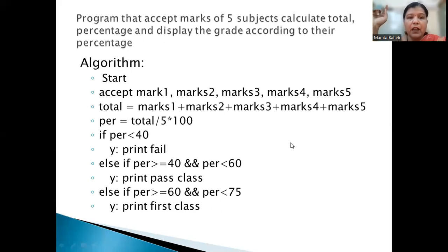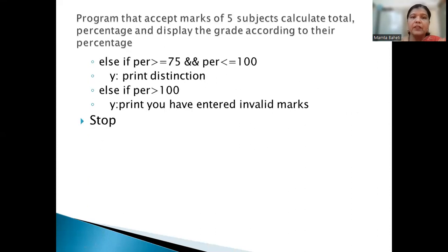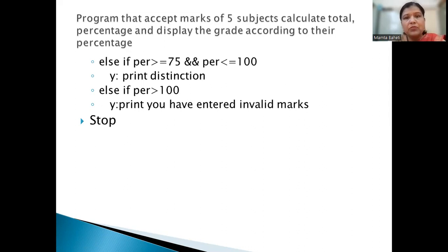Now for grades: if percentage is less than 40, then Fail. Greater than or equal to 40 but less than 60, then Second Class. Greater than or equal to 60 but less than 75, then First Class. Greater than or equal to 75 but less than or equal to 100, then Distinction. And if someone enters greater than 100 — maybe a typing mistake — then a message should say 'you have entered invalid marks', because if the percentage is going beyond 100, it indicates some marks entered are wrong.